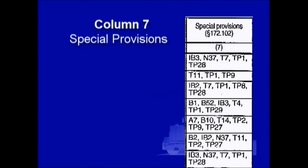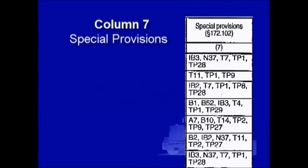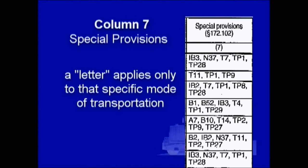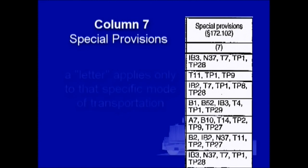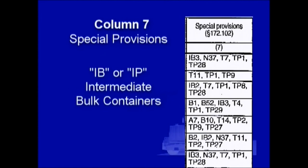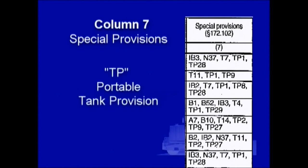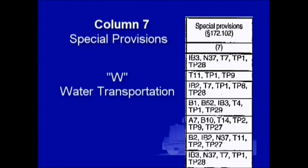These special provision codes are found in the back of your compliance guidebook. A numbers-only code means multimodal in application and may apply to bulk and non-bulk packages. A code containing a letter refers to a special provision which applies only to that specific mode of transportation. An A code applies only to materials to be transported by air. B for bulk packaging. IB or IP refers to a special provision that applies only to transportation in IBCs, or intermediate bulk containers. N for non-bulk packaging. R for rail transportation. T for intermodal portable tanks. TP for a special portable tank provision. And W for transportation by water.